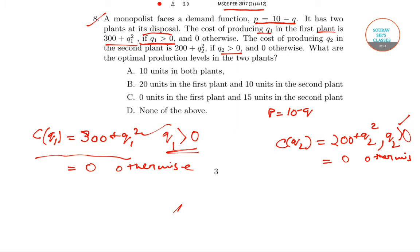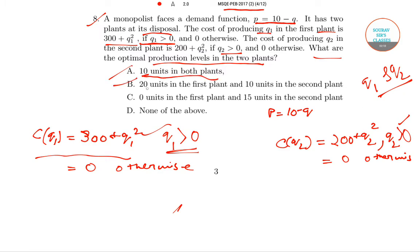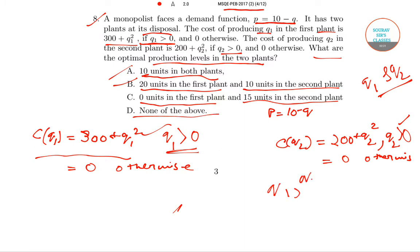The question asks: what are the optimal production levels in the two plants? We have to find q1 and q2. The four options given are: 10 units in both plants; 20 units in plant 1 and 10 units in plant 2; 0 units in plant 1 and 15 units in plant 2; and none of the above.